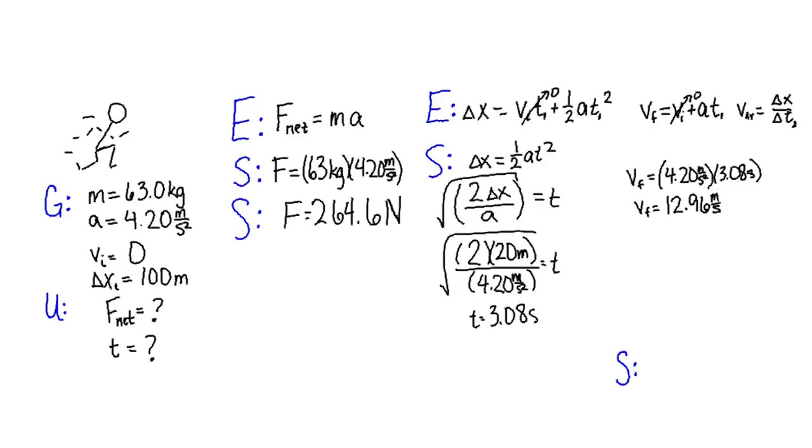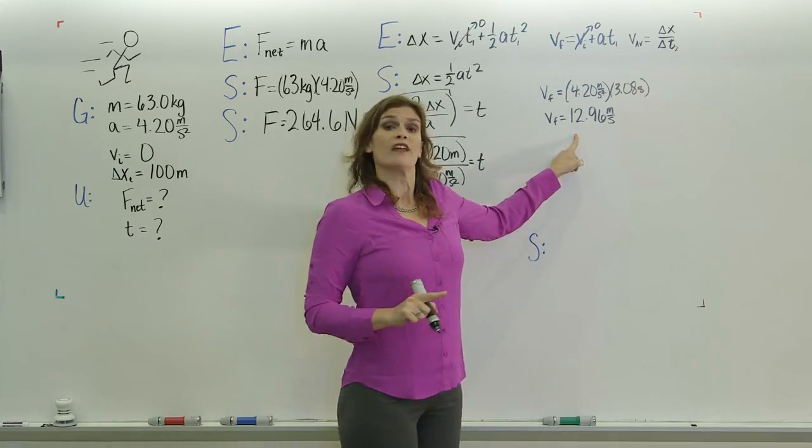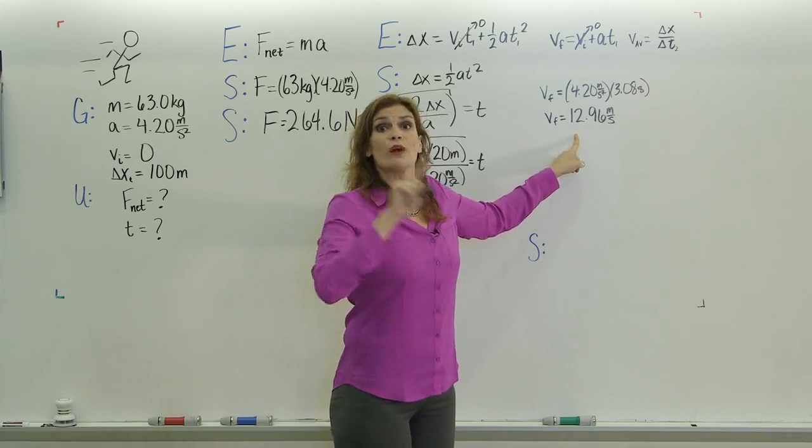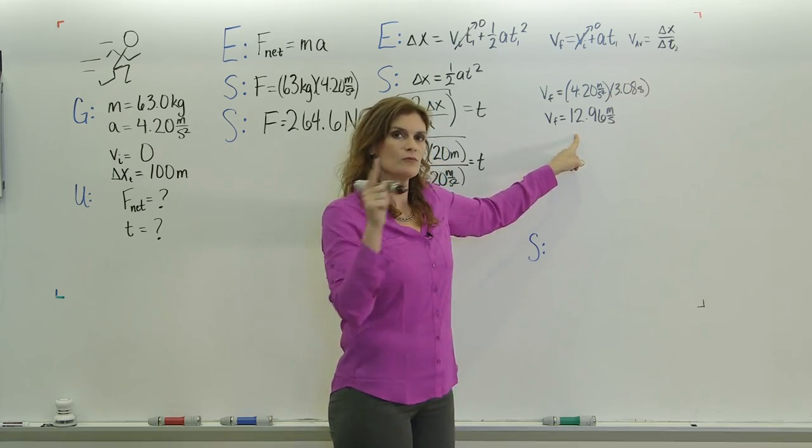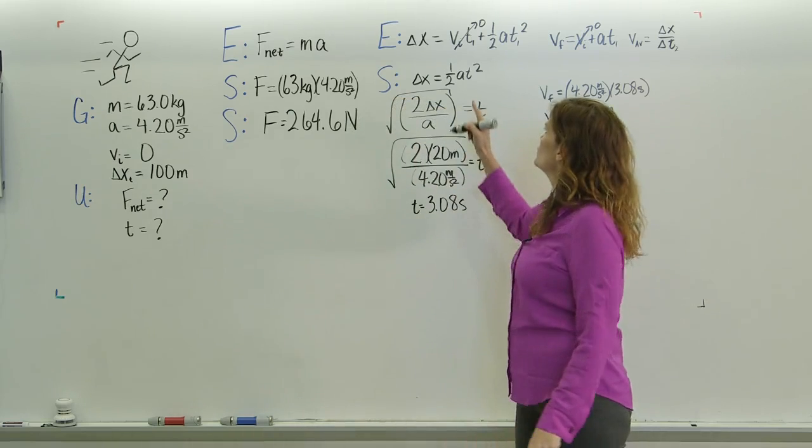That's not our final answer yet, though. What we need to know now is the time it takes him if he's traveling at a velocity of 12.96 meters per second for the rest of the 100-meter dash. The rest of the 100-meter dash is 100 minus this first 20.